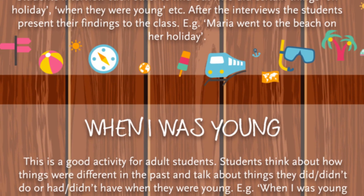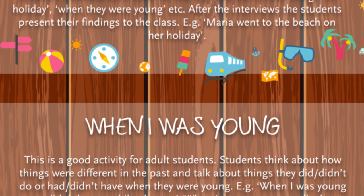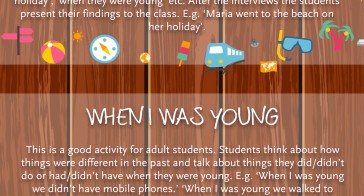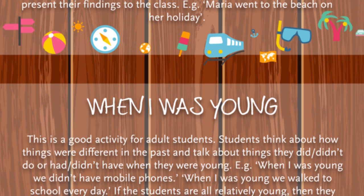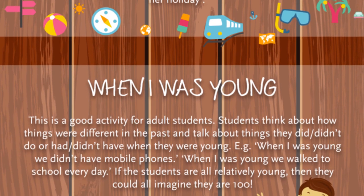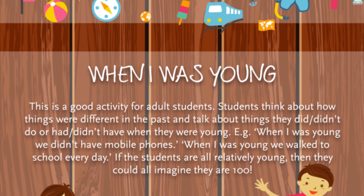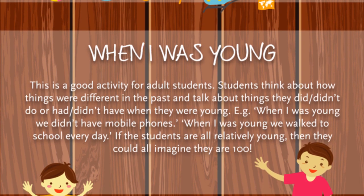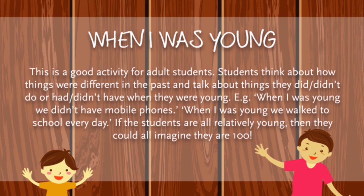This is a good activity for adult students. Students think about how things were different in the past and talk about things they did or didn't do, had or didn't have when they were young. For example: 'When I was young, we didn't have mobile phones.' 'When I was young, we walked to school every day.'